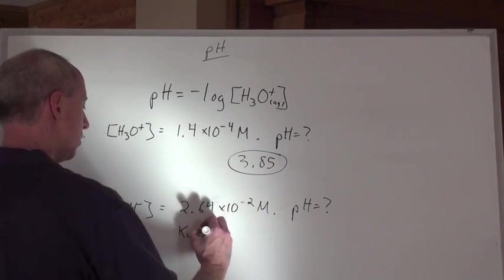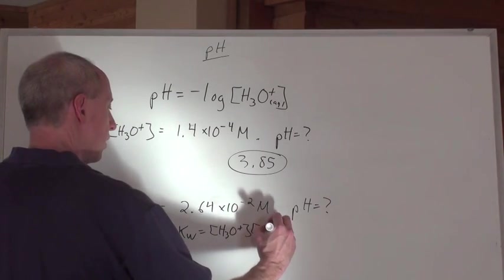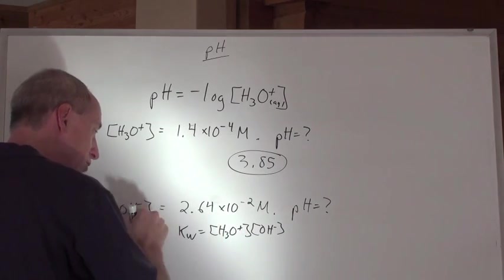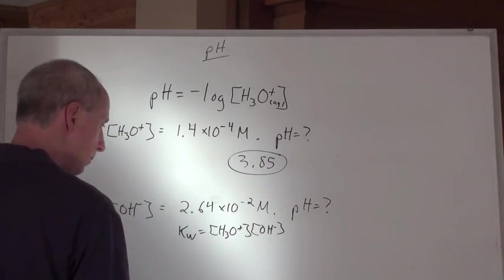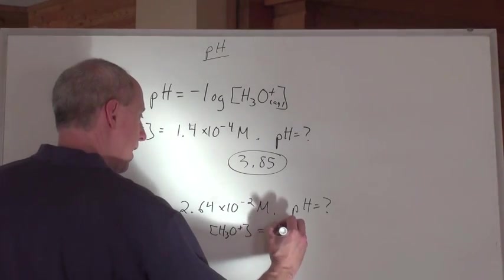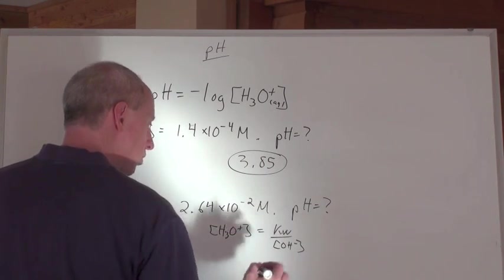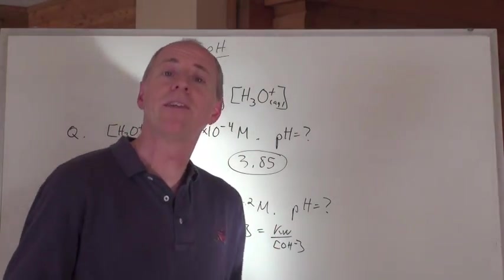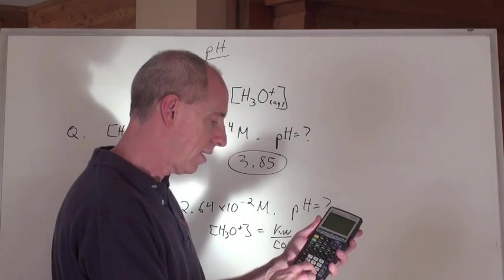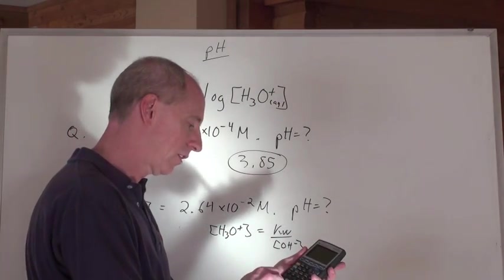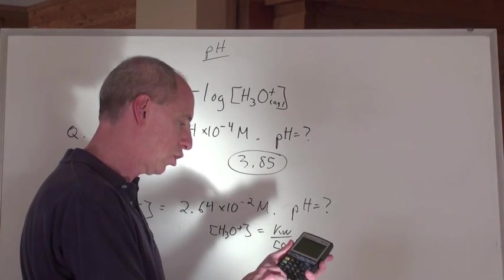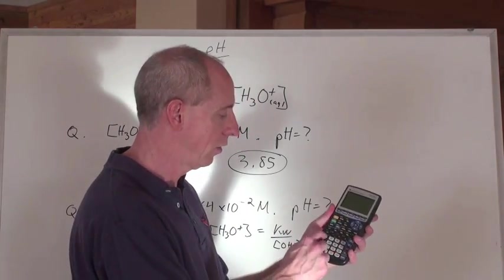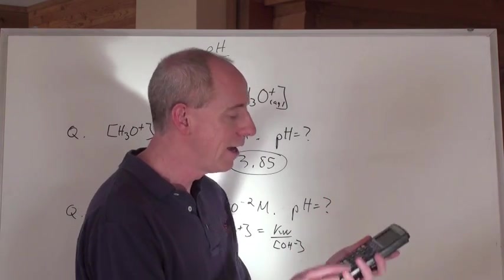Here's what we know: Kw equals the hydronium ion concentration times the hydroxide ion concentration. To calculate pH we need the negative log of the hydronium, but we're given the hydroxide, so we've got to find that hydronium. The hydronium equals Kw divided by the hydroxide. In the calculator, take 1 times 10 to the negative 14 — the equilibrium constant for water — divided by 6.4 times 10 to the negative 2, and enter. That gives you the hydronium ion concentration. Then go negative log, second function, answer, enter, and you get a pH.